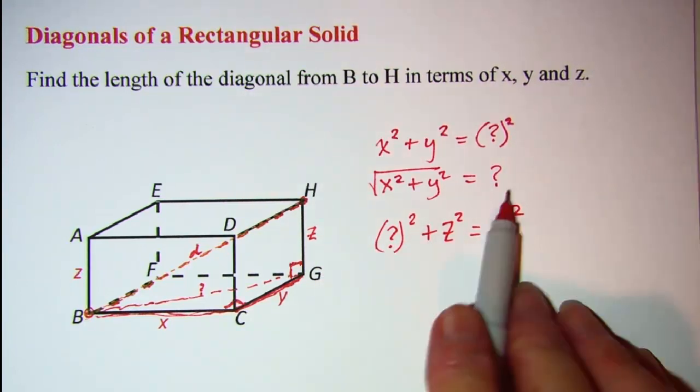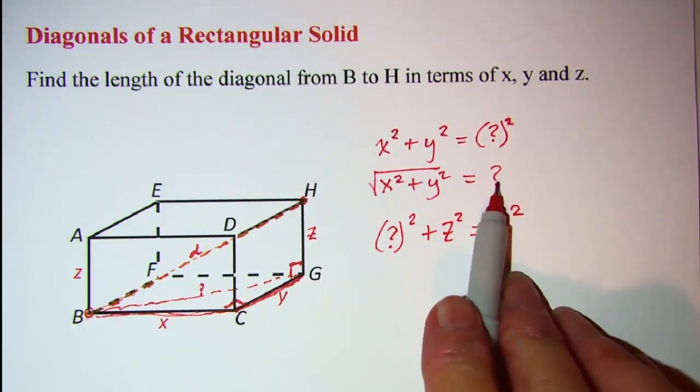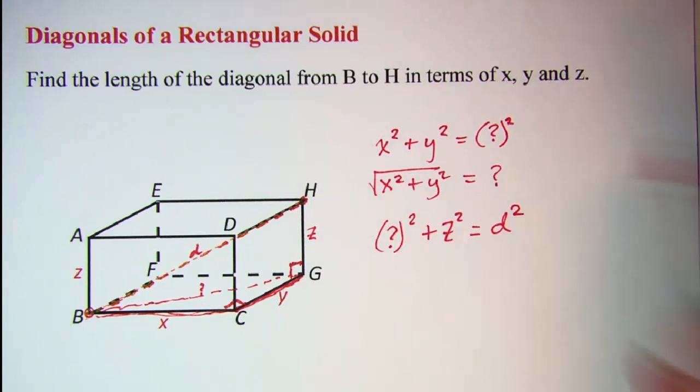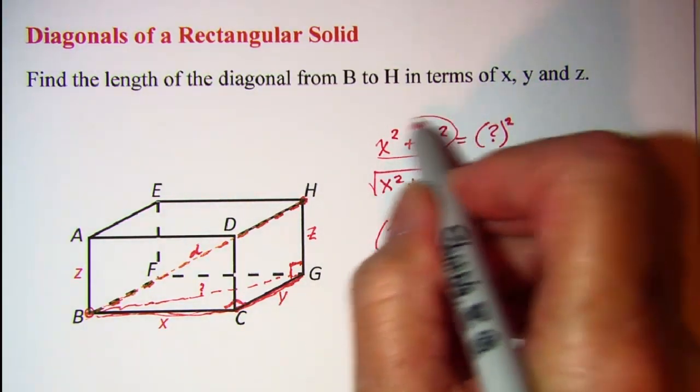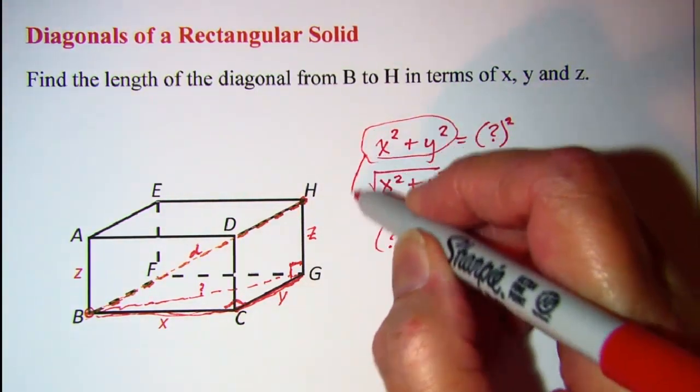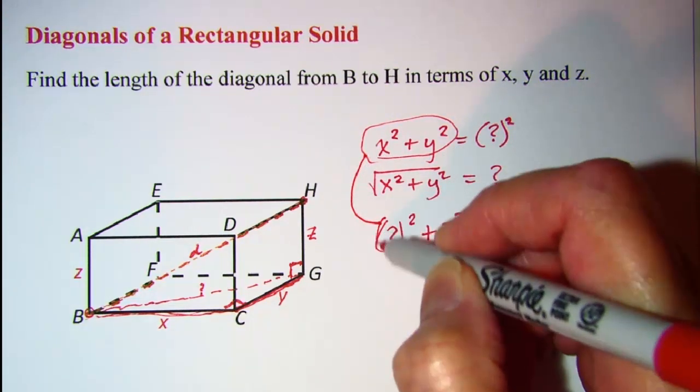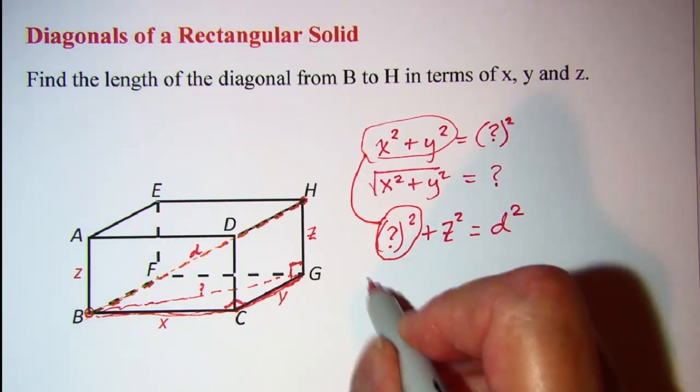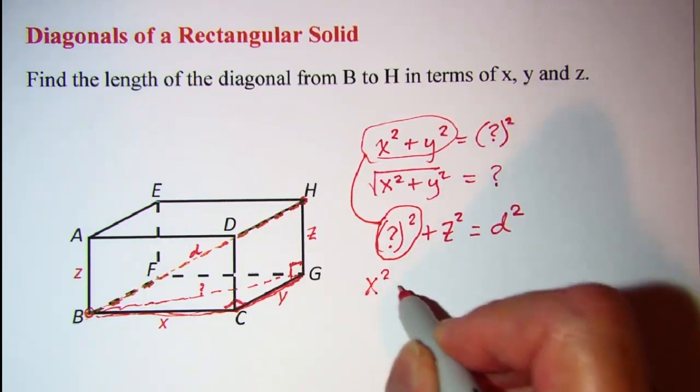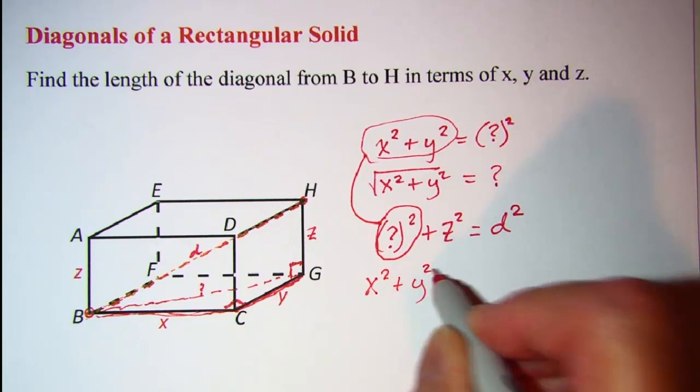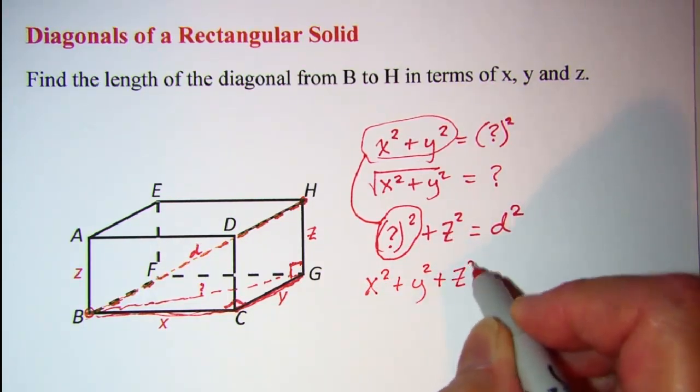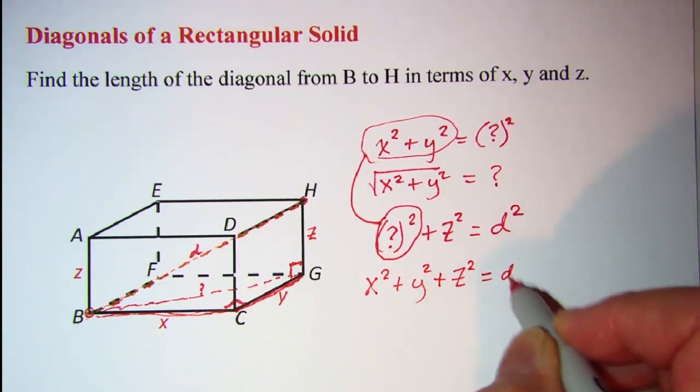Now I don't need to use this in my problem. I can go ahead and come back up here and use question mark squared. And I know that that's equal to x squared plus y squared. So I'll put that in right here for this term and I can write then x squared plus y squared and then continue copying plus z squared is equal to little d squared.